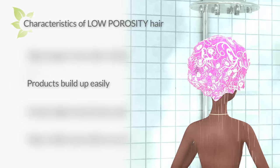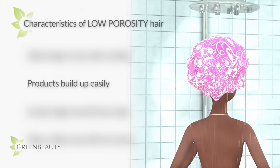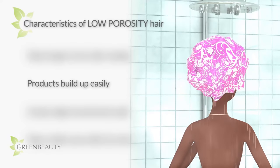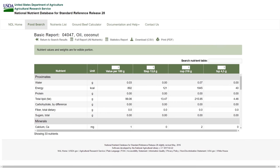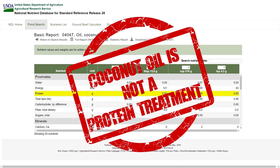After adding coconut oil to your hair, wear a shower cap for 30 to 60 minutes, or to speed up the process hop in the shower — the steam helps your cuticles relax so the coconut oil can penetrate and work its magic. Also, according to the USDA National Nutrient Database, coconut oil has absolutely no protein, so please don't believe anyone who tells you coconut oil is a protein treatment, because it's not.